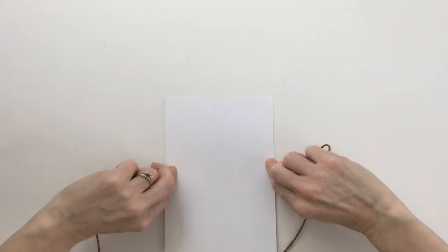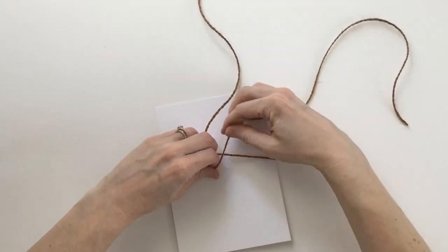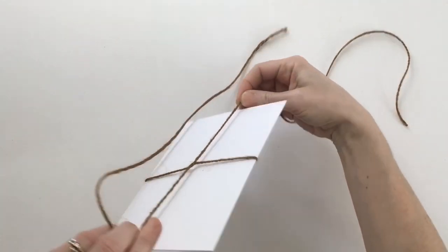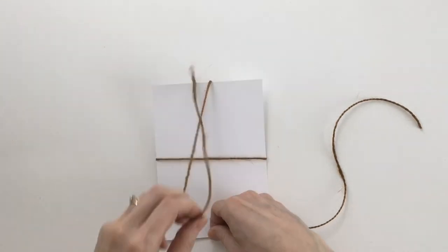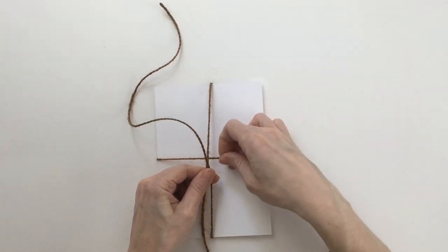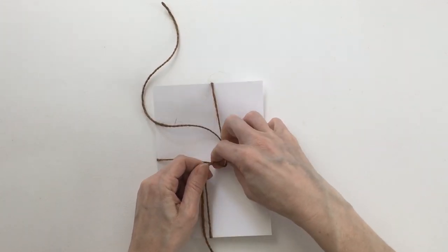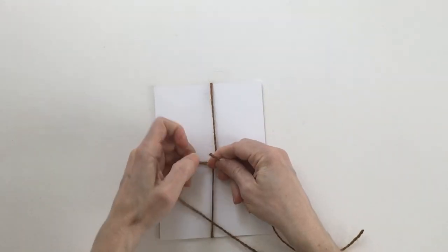I'm going to flip the card, twist it around the back, and then bring it back to the front of the card. Now here, I'm not just going to tie a bow. I'm going to bring this top one right here underneath this first one that we laid down. So I'm going to bring it underneath like this, and then go ahead and tie my bow.